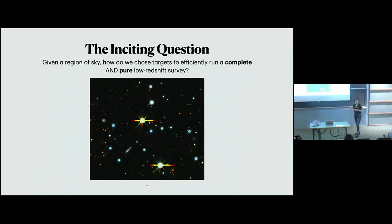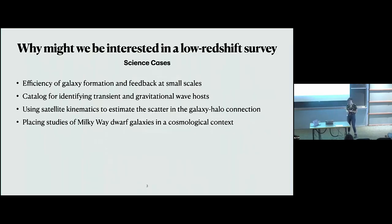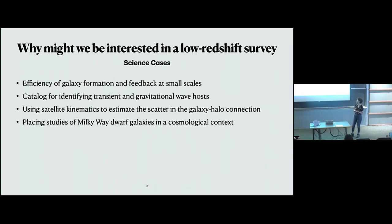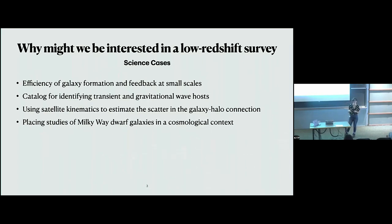The key insight, something John brought up in his talk as well, is: given a region of sky, how do we select targets to efficiently run both a complete and pure low redshift survey? Before we get started on that, we might want to motivate why we'd even be interested. There are a number of science cases for having a dense survey of the low redshift universe, including galaxy formation feedback at small scales, a catalog for identifying transients and gravitational wave hosts, satellite kinematics to estimate scatter in the galaxy-halo connection, and placing Milky Way dwarf galaxies in a more cosmological context.